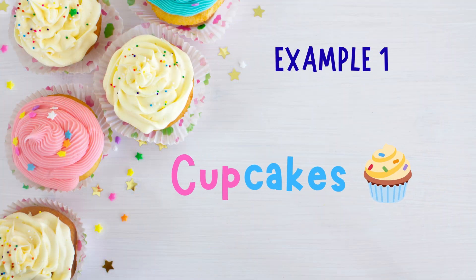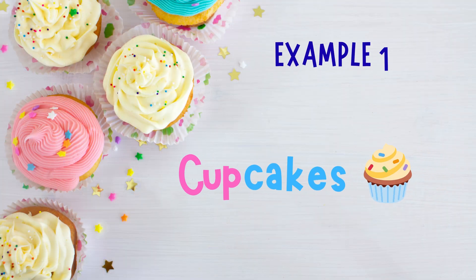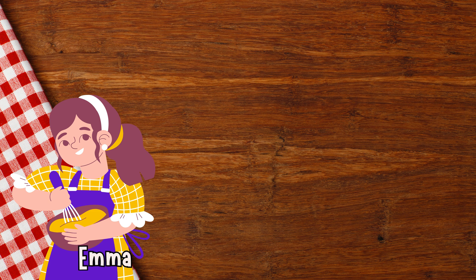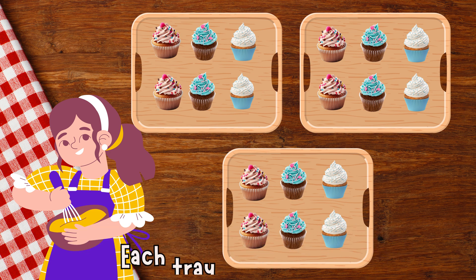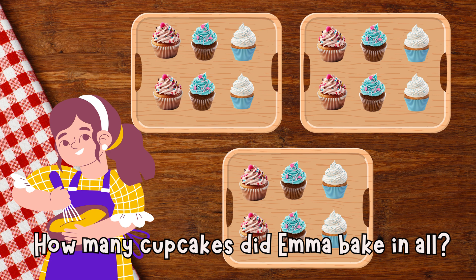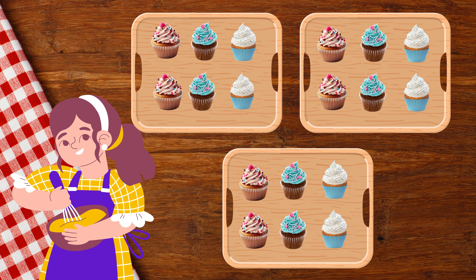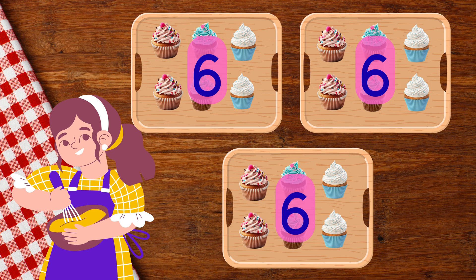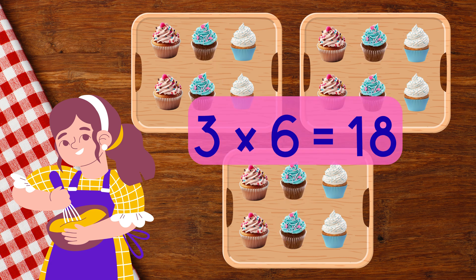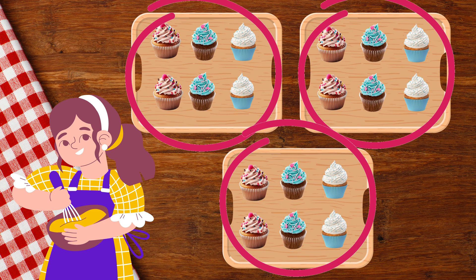Example one: Cupcakes. Let's solve our first word problem together. Emma baked three trays of cupcakes. Each tray has six cupcakes. How many cupcakes did Emma bake in all? We have three equal groups of six. That means three times six equals eighteen. Emma baked eighteen cupcakes. So remember, when we see equal groups, we multiply.